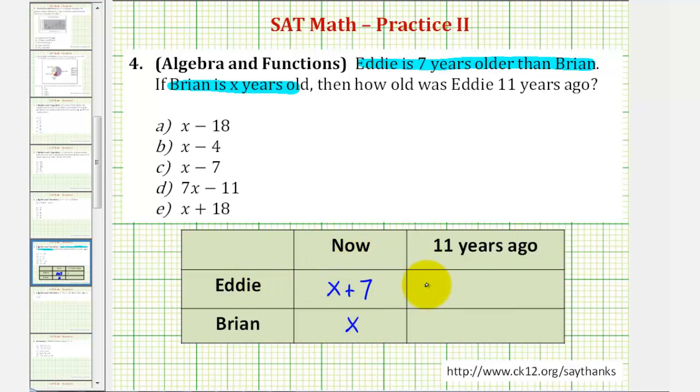So Eddie would be x plus seven minus eleven years old, and Brian would just be x minus eleven years old. So if we simplify this expression here, we'll have an expression for Eddie's age eleven years ago. So seven minus eleven is negative four, so this simplifies to x minus four, which is Eddie's age eleven years ago.